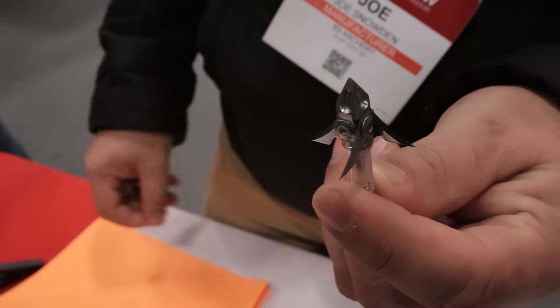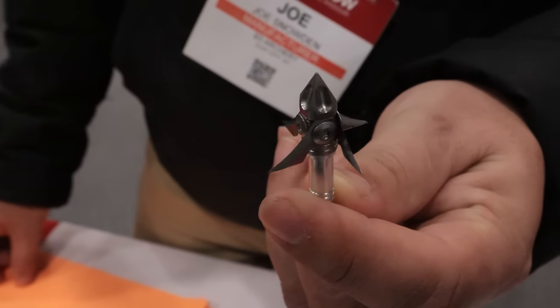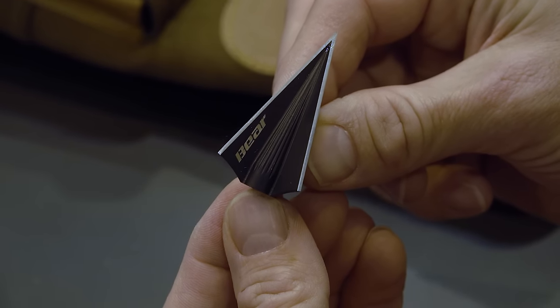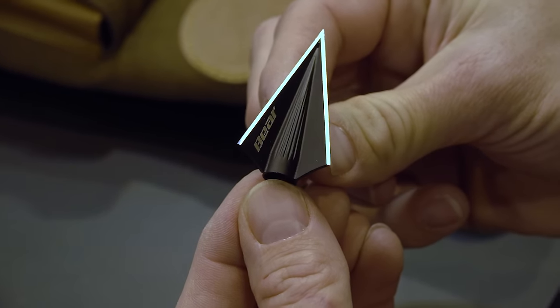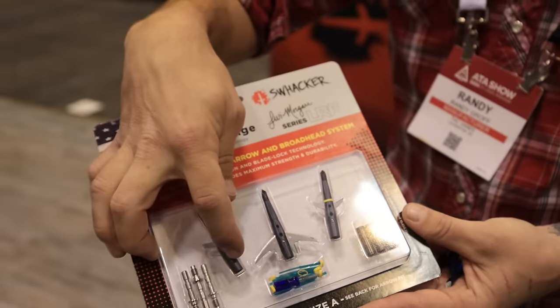When it comes to bowhunting equipment, there are a few things as talked about and heavily debated as broadheads. Whether you like a massive cutting diameter expandable head or a small heavy fixed blade designed to bust through bone, there are options out there for everyone.